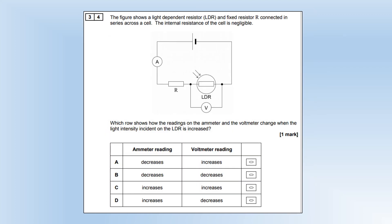Final question. The figure shows an LDR and a fixed resistor connected in series across a cell. The internal resistance of the cell is negligible. Which row shows how the readings on the ammeter and the voltmeter change when the light intensity is increased. When light intensity is increased, the current through the LDR will increase, or its resistance decreases. So the ammeter reading is clearly going to increase, so it's got to be either C or D. But the resistance of the LDR drops, so its potential difference will drop as well, leaving us with option D, completing this paper 2 paper.